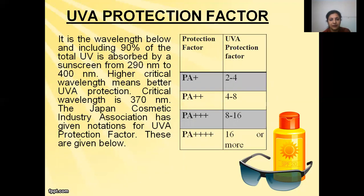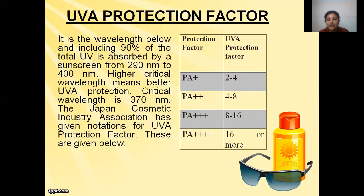Another factor is UVAPF, the UVA protection factor. It is the critical wavelength below which 90% of the total UVA absorbed by a sunscreen falls, measured from 290 to 400 nanometers. A higher critical wavelength means better UVA protection. The critical wavelength is 370 nanometers. The Japan Cosmetic Industry Association has given notations for UVAPF: PA+ means UVA protection factor of 2 to 4, PA++ means 4 to 8, PA+++ means 8 to 16, and PA++++ means 16 or more.